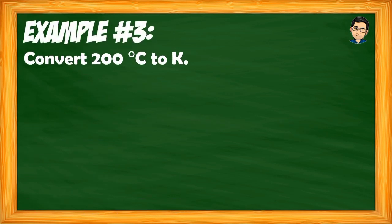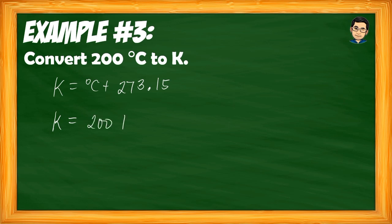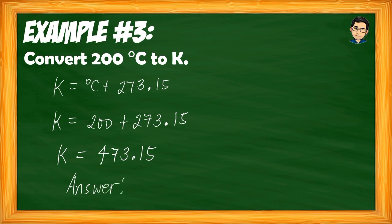Example 3: Convert 200 degrees Celsius to Kelvin. Converting Celsius to Kelvin is straightforward — just add 273.15 to the given temperature in Celsius. Substituting: K = 200 + 273.15 = 473.15. Our final answer is 473.15 Kelvin. Note there is no degree symbol for Kelvin because it is an absolute scale.